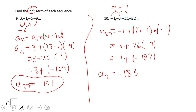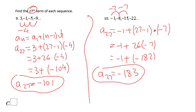The 27th term of this arithmetic sequence is negative 183. If you enjoyed this math video clip, don't forget to click the like button and come back to C-Square for more math video clips. Thank you.